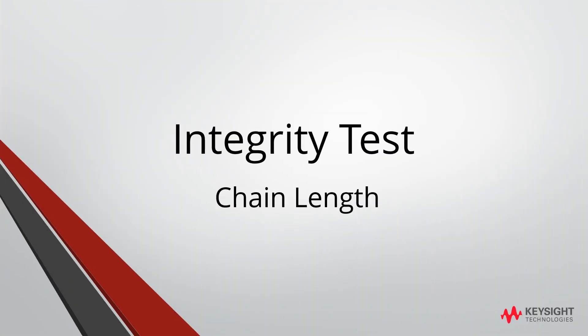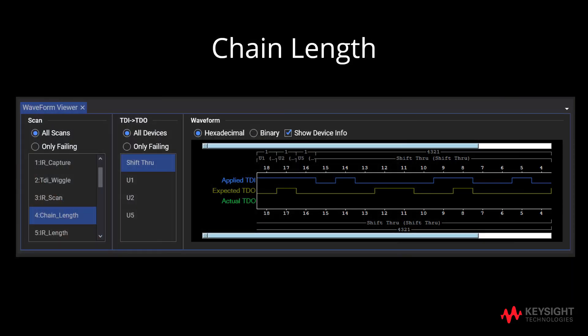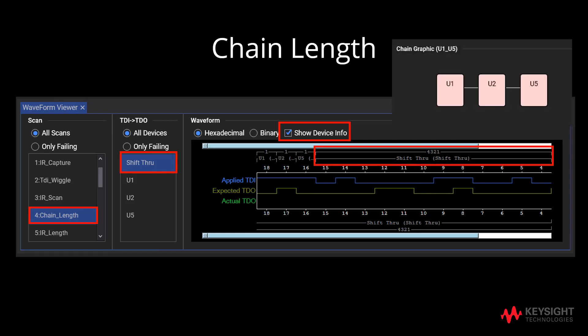Now, we will identify the chain length from the waveform viewer. By clicking on shift through from chain_length, we can see that the graph from applied TDI has shifted three times as shown in the expected TDO. This proves that there are three devices, as shown from U1, U2, and U5 from the initial chain graphic.